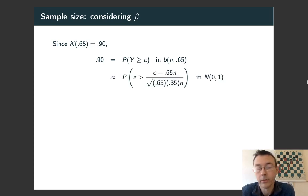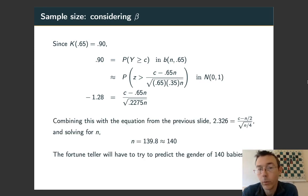Again, we use a normal approximation. We say that probability in the binomial distribution is the probability of getting a z value at random greater than or equal to the corresponding z value for Y = c. We do the same procedure as before. We do an inverse normal calculation, this time doing it on 0.1, and we get this relation: -1.28 = (c - 0.65n) / √(0.2275n).